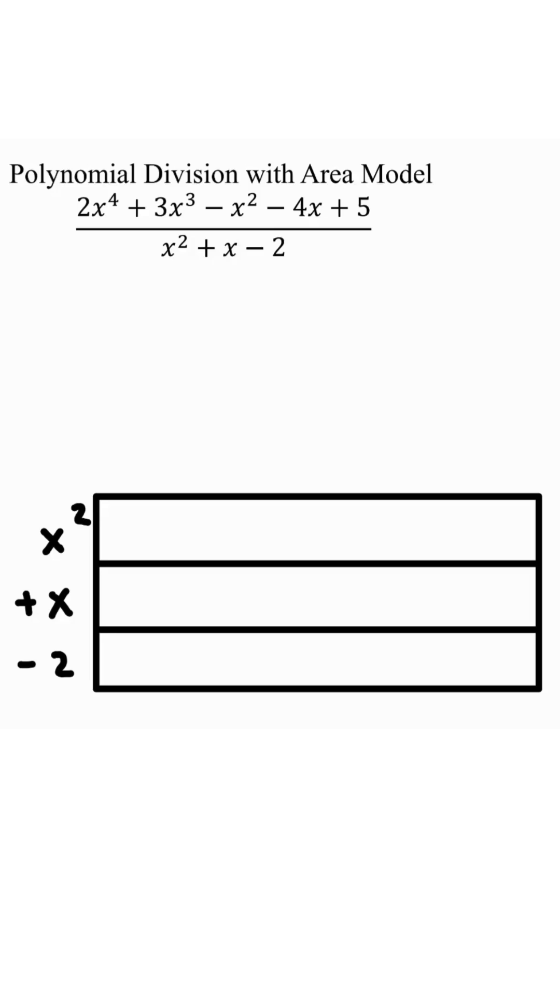Inside the box, we're going to write the numerators. So we have 2x to the 4th, we're going to write 2x to the 4th right here. Factor out the x squared away from 2x to the 4th, we'll end up with 2x squared.